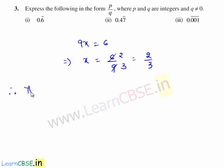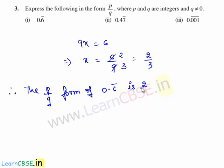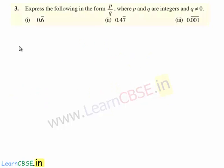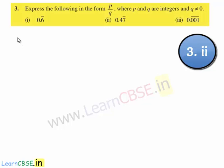Therefore the p by q form of the given decimal expansion 0.6 bar is 2 upon 3, where 2 and 3 are integers and the denominator is not equal to 0. Now let us move on to the second bit of the question.